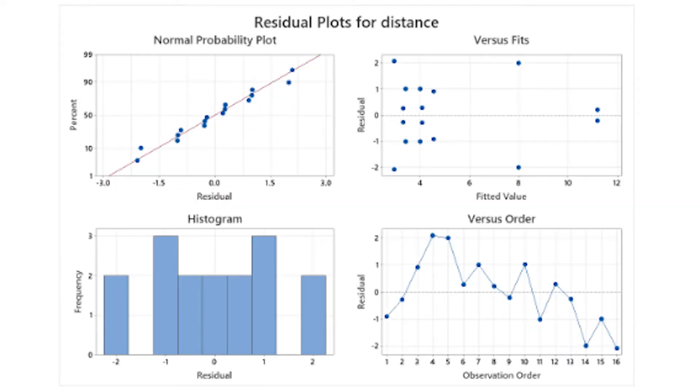In looking at the residual plots, we see that the normal probability plot appears normal. For the versus fits, it does not have a specific pattern in either direction. And for versus order, all points are well within the control limit. As a conclusion, the residuals are normally distributed with a mean of zero, with a constant variance.